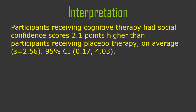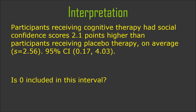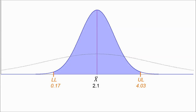The interpretation: after participants received cognitive therapy, they tended to have social confidence scores on average 2.1 points higher than after they had received placebo therapy. The standard deviation of those difference scores gives us a 95% confidence interval of 0.17 to 4.03. Is zero included in this interval? And what does that imply? And I'm going to end there.